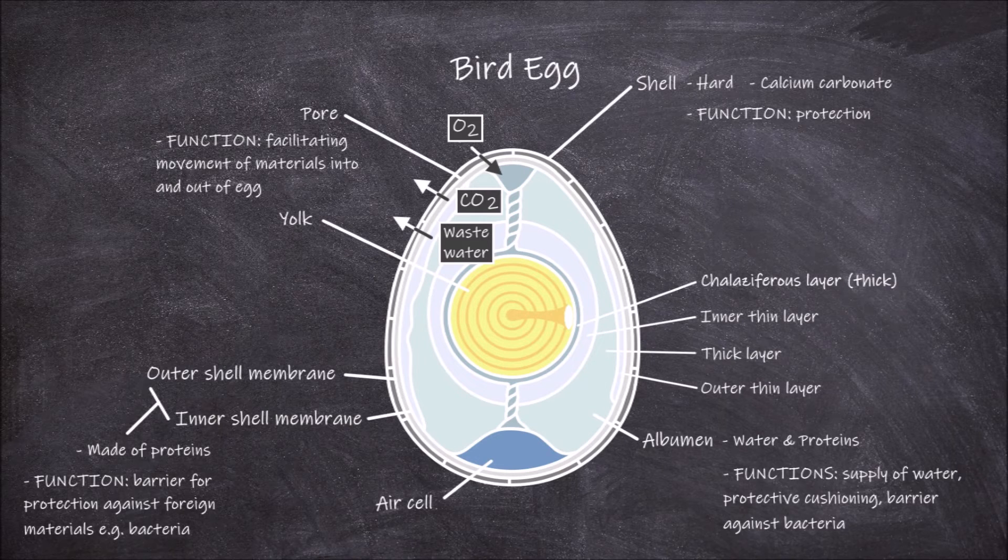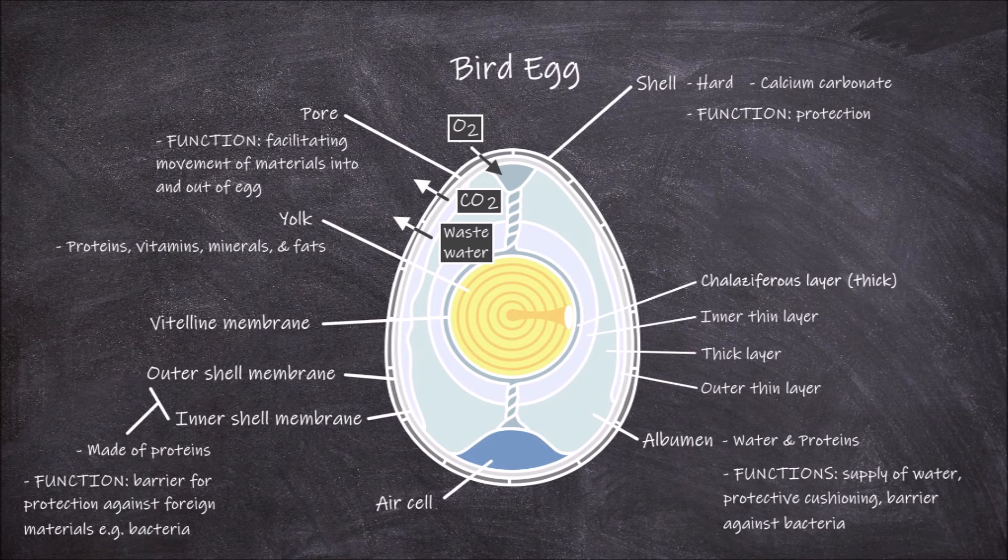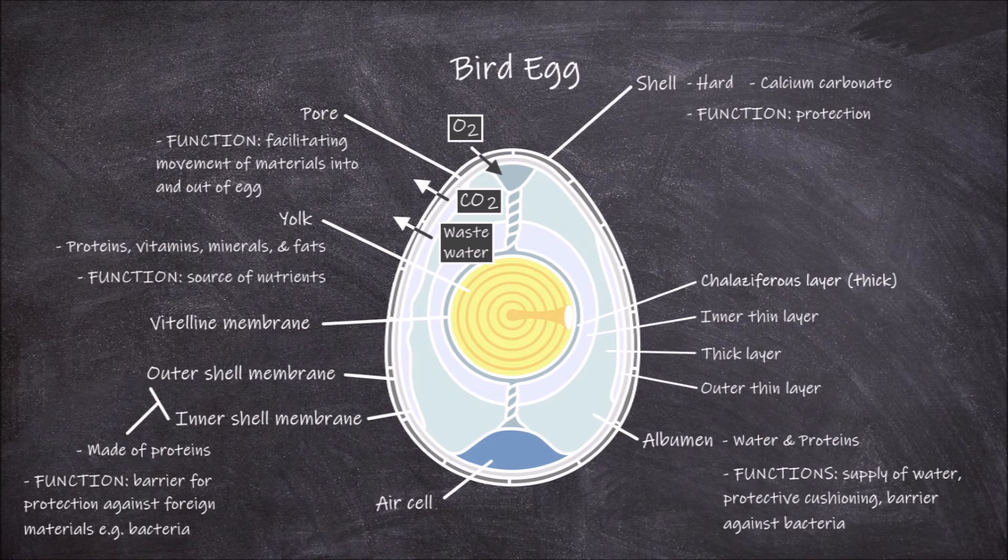The yolk is found beneath the albumin. The yolk has its own clear membrane called the vitelline membrane. The yolk is made up of a series of layers of darker and lighter yolk. The yolk consists of the majority of the proteins, vitamins, and minerals found in the egg. Unlike the albumin, the yolk also contains the only fat and cholesterol found in the egg. The function of the yolk is that it is the main source of nutrients for the growing embryo.